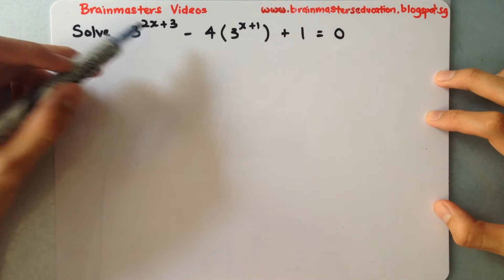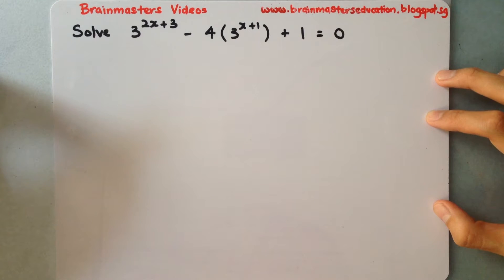3 to the power of 2x plus 3 minus 4 multiplied by 3 to the power of x plus 1 plus 1 equals 0.